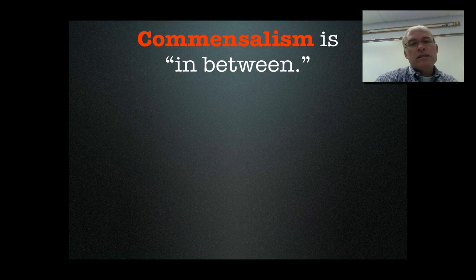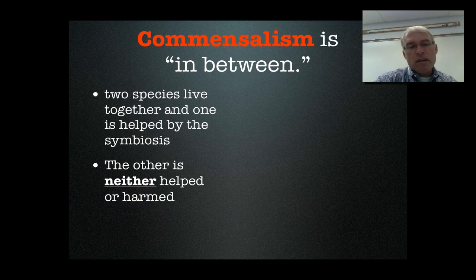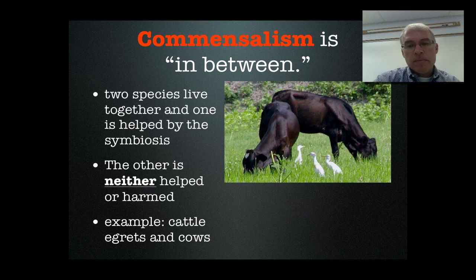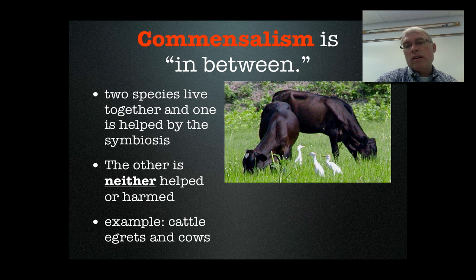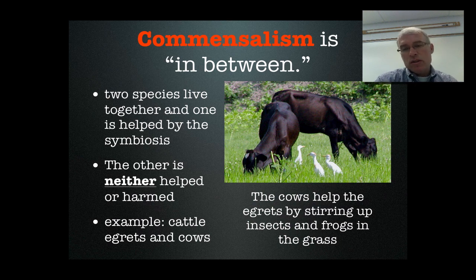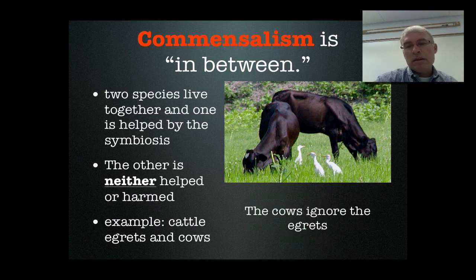Our last one is commensalism, which falls between parasitism and mutualism. It's when two species live together and one is helped by the symbiosis, but the other is neither helped nor harmed. A good example is cattle egrets and cows. Cows are large grazing animals that walk around in grassland, and as they walk and eat grass, they stir up creatures. Egrets follow the cows around eating insects and frogs that the cows stir up. The cows could care less about the egrets and basically ignore them.